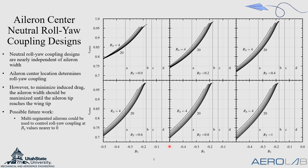One thing we noted from our analytic development is, at a B3 value of zero, which is the elliptic lift distribution, there is no aileron design that can control roll-yaw coupling.